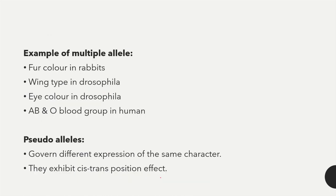Examples of multiple alleles are fur color in rabbits, wing type in Drosophila, eye color in Drosophila, and A, B, and O blood groups in humans. In multiple allelism, like the ABO blood group, three genes are responsible: IA, IB, and IO.